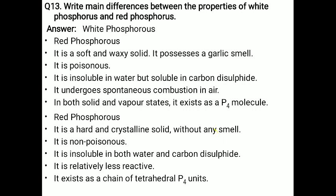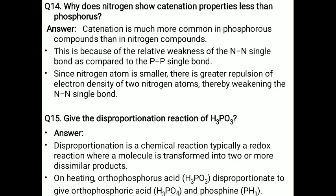Question 14: Why does nitrogen show catenation property less than phosphorus? Nitrogen shows less catenation because it is smaller in size, has high electronegativity, high ionization energy, absence of vacant d-orbitals, and forms strong p-p pi bonds. Question 15: Give the disproportionation reaction of H3PO3 (phosphorous acid).